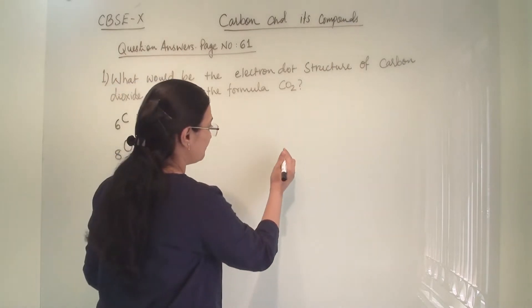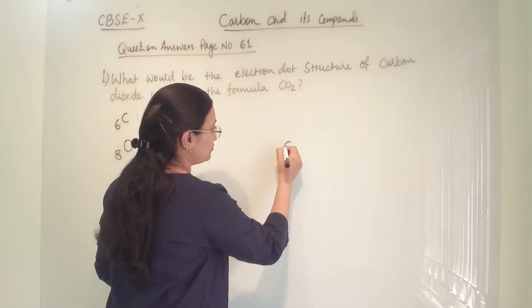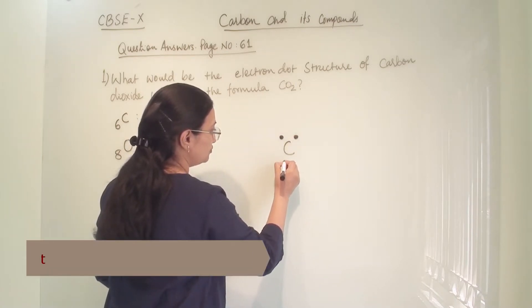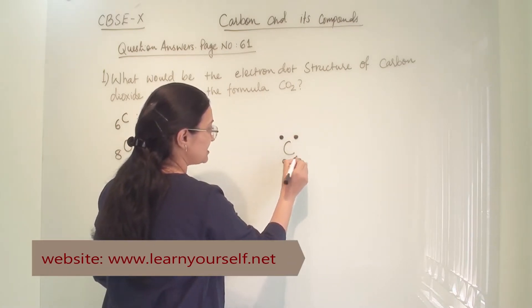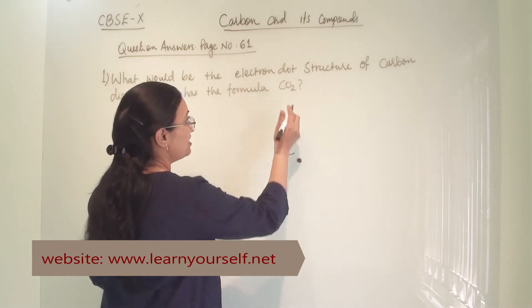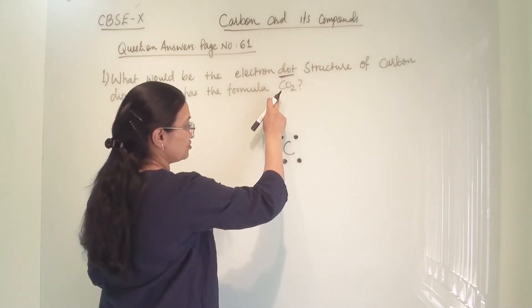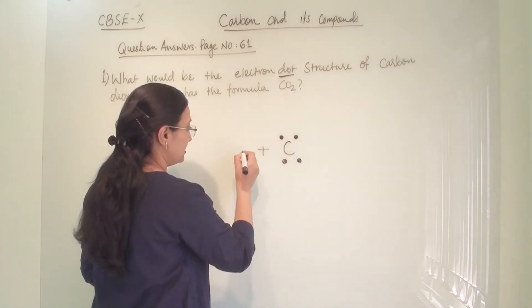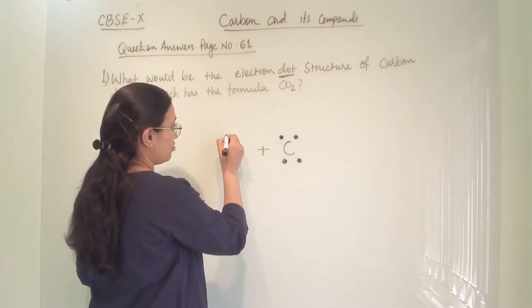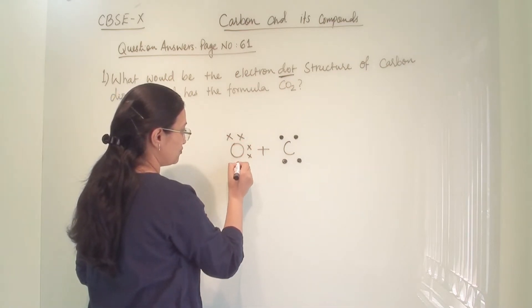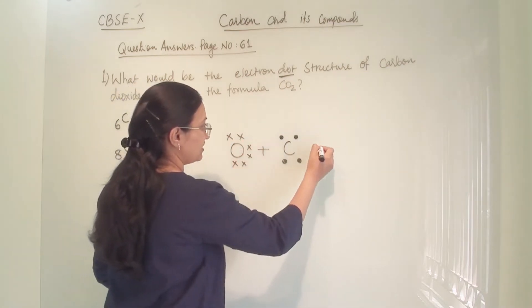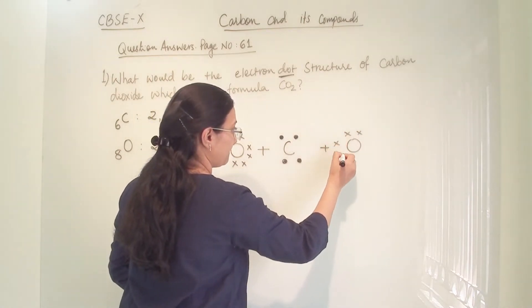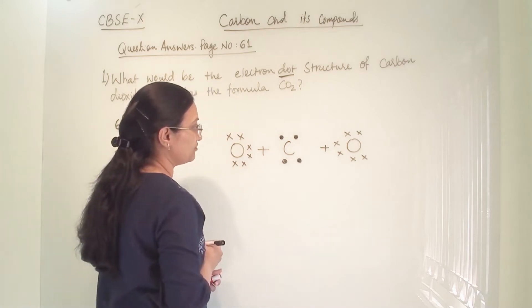Let us see how they will share electrons. This is our carbon — let us show 1, 2, 3, and 4 valence electrons. We are showing the dot structure, so in dot structure we are always showing only valence electrons. Now for oxygen, we are showing its 6 electrons like this.